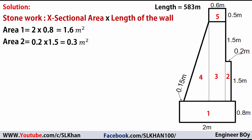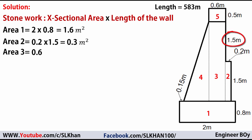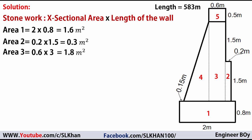Shape 3 is a vertical rectangle, so its base times its depth gives its area: 0.6 meters, which is its base, times 3 meters — that is 1.5 plus 1.5 — for a total of 1.8 square meters.